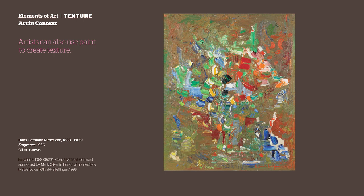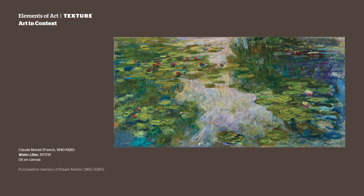Artists can also use paint to create texture. Look at Hans Hoffmann's painting Fragrance. He's layered paint on his canvas in thick brush strokes using a technique called impasto painting. With this technique, the paint itself becomes textural. What do you think the paint feels like? Does it look wet or dry? Squishy or hard? Is the texture real or implied?